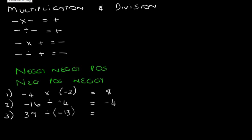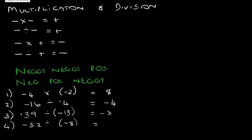39 divided by negative 13: we know that the 39 has an invisible plus, so it's positive 39 divided by negative 13. Positive divided by negative is a negative, and 39 divided by 13 is 3, so your answer is negative 3. Let's look at our final example: minus 32 divided by minus 8. A negative divided by a negative is a positive, and 32 divided by 8 is 4.